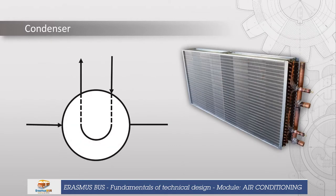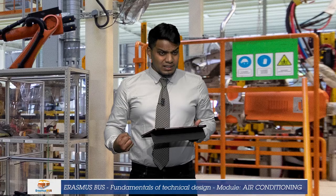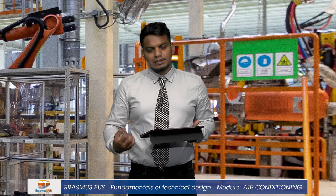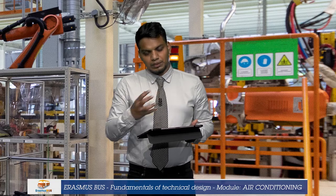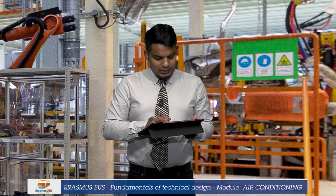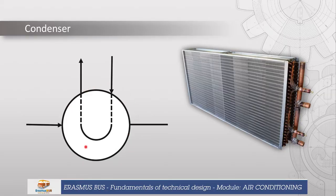In a condenser, the process taking place is that a gaseous refrigerant turns into a liquid refrigerant. To symbolize that, this circle represents the inner coil, with the ambient conditions shown around it. The liquid leaving the condensing coil is shown here, while the gaseous refrigerant entering changes its state and leaves as a liquid from the condensing coil.